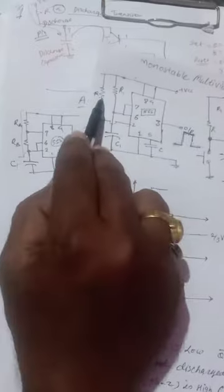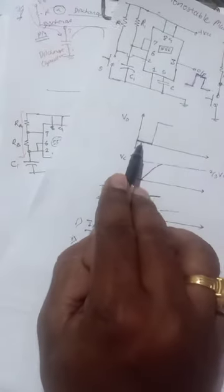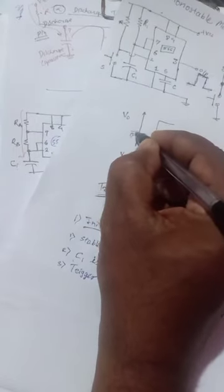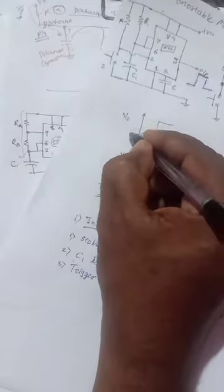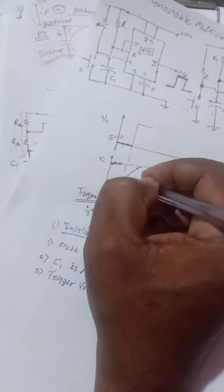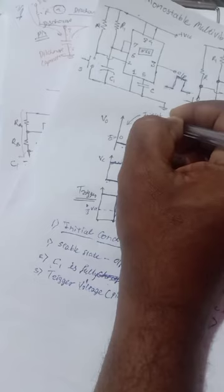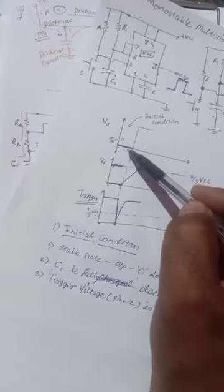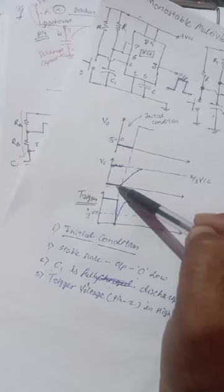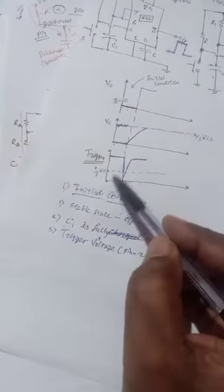The trigger voltage is high initially. This is because when the switch is released, pin number 2 is connected to VCC through resistor R, giving a high voltage. So the initial conditions are: output voltage is low (Q-bar = 0), capacitor voltage is zero, and trigger voltage is high.